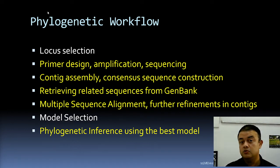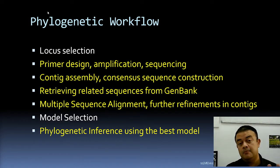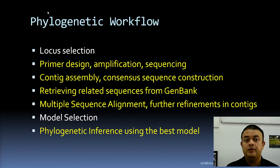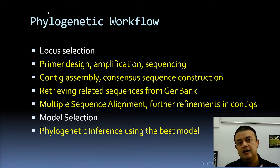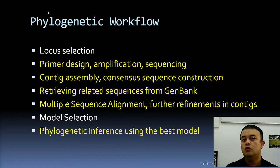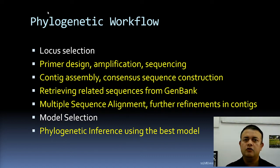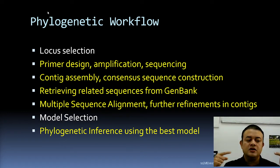Sanger sequencing is an older technology and the read length is proportional to the capillary — it's capillary electrophoresis. Sequencing is essentially gel electrophoresis but in capillary form. A longer capillary gives a longer read length; a shorter capillary gives a shorter read length. Once you have these two directional reads, you need to assemble them.